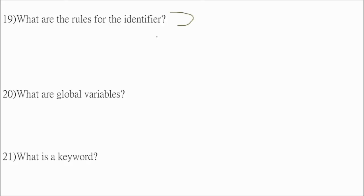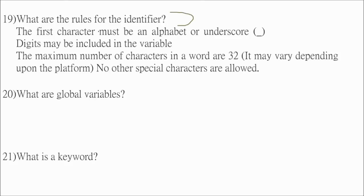What are the rules for the identifier? The first character must be an alphabet or an underscore. You cannot start with a number. You cannot start with any 0 to 9 number. Digits to be specific. Digits may be included in the variable but inside. The maximum number of characters in a word are 32. Actually it depends on the platform. So no other special characters are allowed. Only one special character that is underscore.